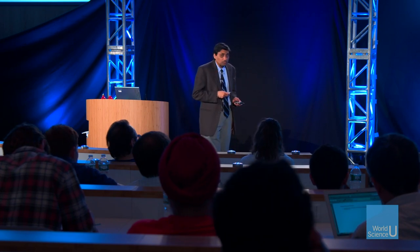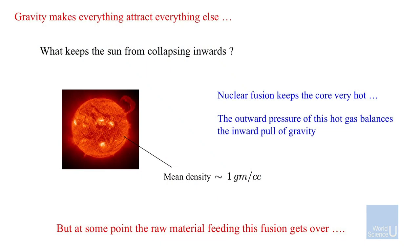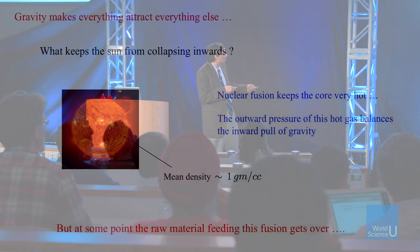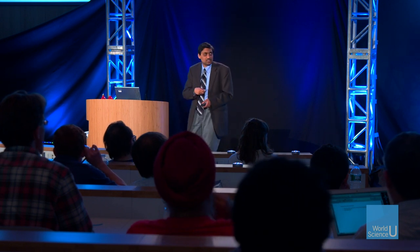Let's begin with something very simple: what is a black hole? Gravity just makes everything attract everything else, so everything is trying to collapse towards each other. If you take something like the sun, which is a huge massive object, why doesn't the whole thing just attract itself and shrink down to a point? Well, there's nuclear fusion going on, the core is very hot, that creates a pressure that balances the attraction of gravity, and you get the sun. In fact, the sun doesn't have too much density — the overall average density is just like the density of water.